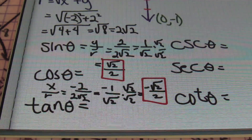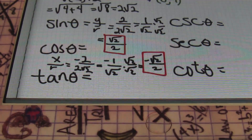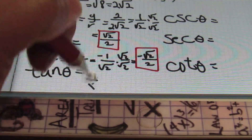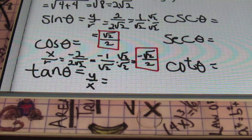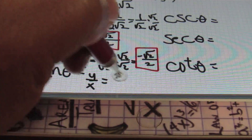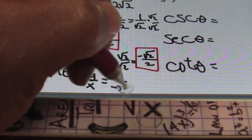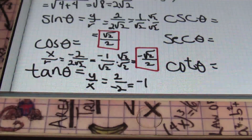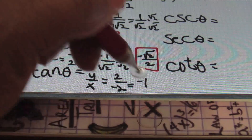Next, I'll be looking at tan theta. Tan theta is the ratio of y over x. Plugging in my value of y, which is positive two, over my value of x, which is negative two, this simplifies to give me negative one as my value of tan theta.